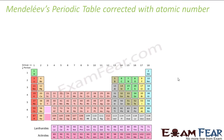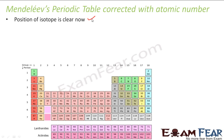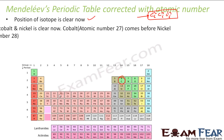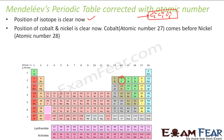Just understand what atomic number did with the Moseley periodic table — it corrected everything. The first thing is the position of isotopes is now clear. Isotopes have the same atomic number. For example, carbon C has atomic masses 12, 13, and 14, but all have the same atomic number 6. So there is only one place for carbon. Since it is no longer based on atomic mass, there is no confusion with isotopes. The position of cobalt and nickel is also now clear.